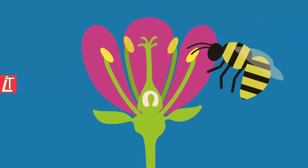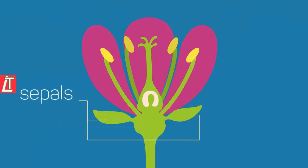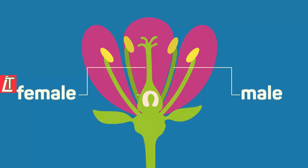Insects visit flowers to drink the nectar, a sugary substance produced in the nectary. The sepals protect the bud when the flower is developing. Flowers have both male and female parts.